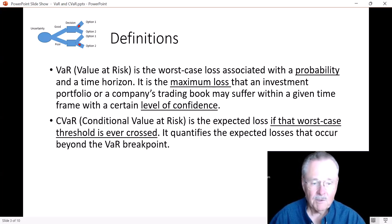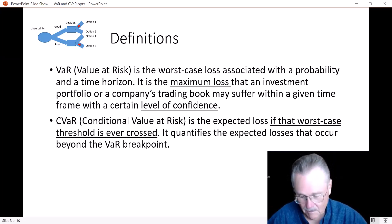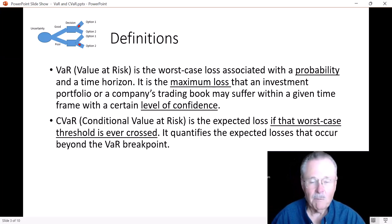And then the conditional value at risk is the expected loss if that worst case scenario is ever crossed. It quantifies the expected losses that occur beyond the VaR breakpoint. Well, clearly that's understandable. No, not really. So let's go deeper.